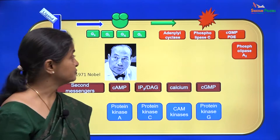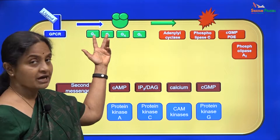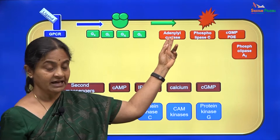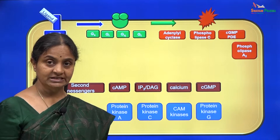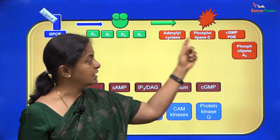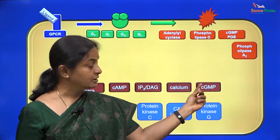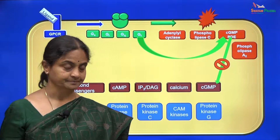In the previous modules, we have looked at how GS and GI subtypes of G proteins act on adenylyl cyclase to increase cyclic AMP levels within the cell, and how GQ acts on phospholipase C to increase two second messengers within the cell. Now we will be looking at how the GT subtype of G protein acts on cGMP phosphodiesterase, another membrane enzyme, to actually decrease cGMP levels within the cell.